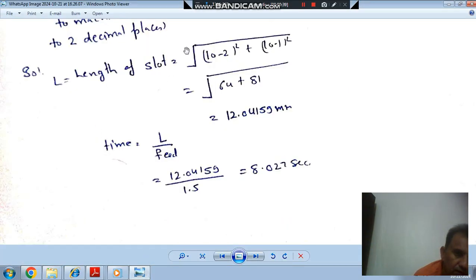So, length of slot is the shortest distance. Length of slot equals the square root of difference of x coordinates squared plus difference of y coordinates squared.